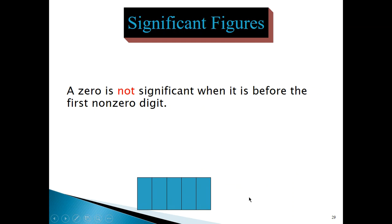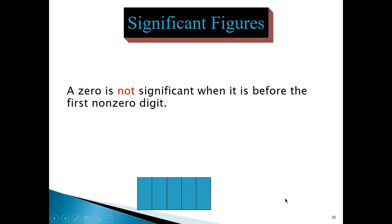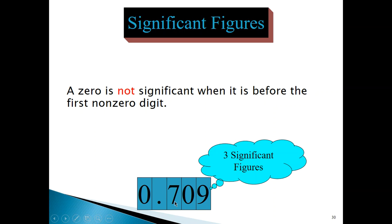Now let's deal with a situation where zeros are not significant. A zero is not significant when it is before the first non-zero digit. So if you have zeros before the first non-zero digit, those zeros are not significant. For example, with three zeros coming before the first non-zero digit, the only significant digit is the non-zero digit — in this case, six. In another example with both types of zeros, the zeros before the first non-zero digit are not significant, while the sandwiched zero is significant, so the total number of significant digits is three.